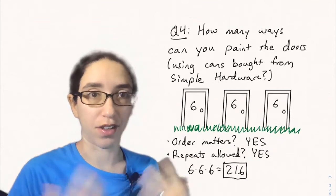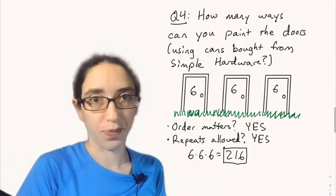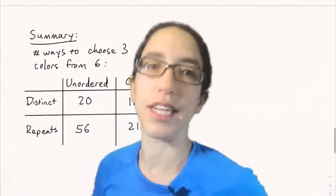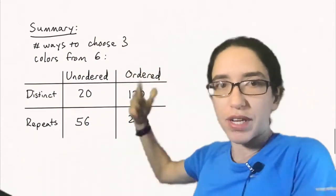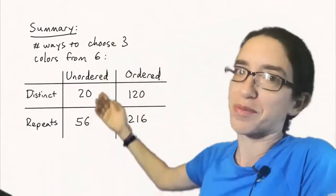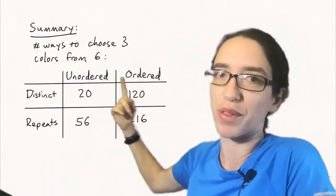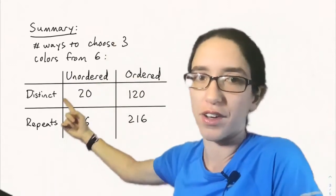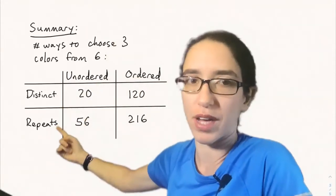So again a different answer than all the other answers we've gotten before. So let's summarize this in a table. How many ways can we choose three colors out of six colors? Well it depends what you mean. Are you choosing with order or not with order and are your colors all distinct or can you have repeats?